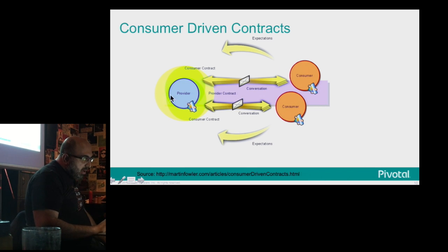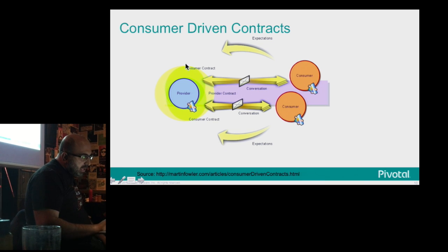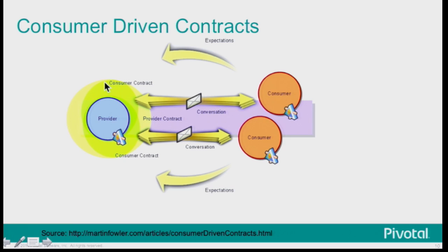You can see the provider with one consumer contract coming in from one client and another coming from another client. Everybody contributes the test they care about, and it's the union of all of them that is the actual test of that API.